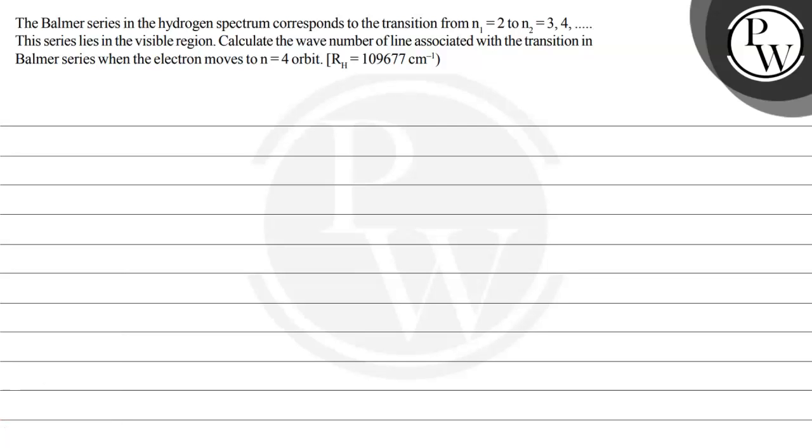Hello, let's read this question. The question says the Balmer series in the hydrogen spectrum corresponds to the transition from n₁ equals 2 to n₂ equals 3, 4, and so on. The series lies in the visible region.